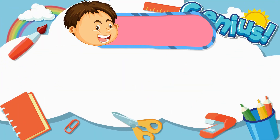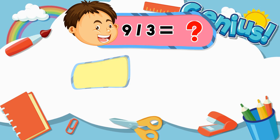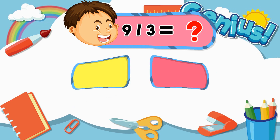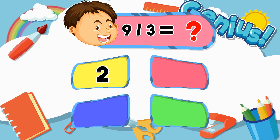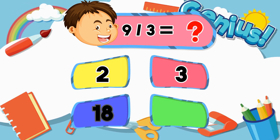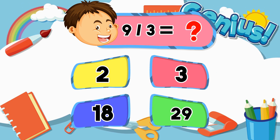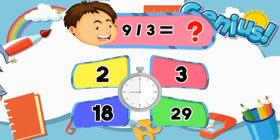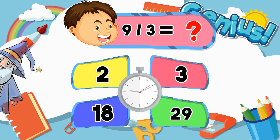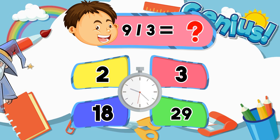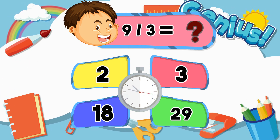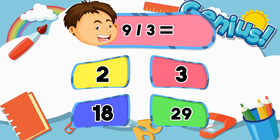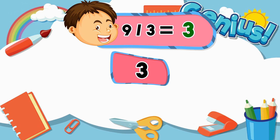What is nine divided by three? Two. Three. Eighteen. Twenty-nine. Three.